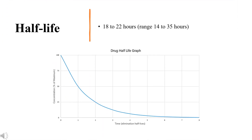Half-life: The half-life in normal volunteers averages 18 to 22 hours, with a range of 14 to 35 hours, but can vary by up to 7 hours in the same subject at different times.